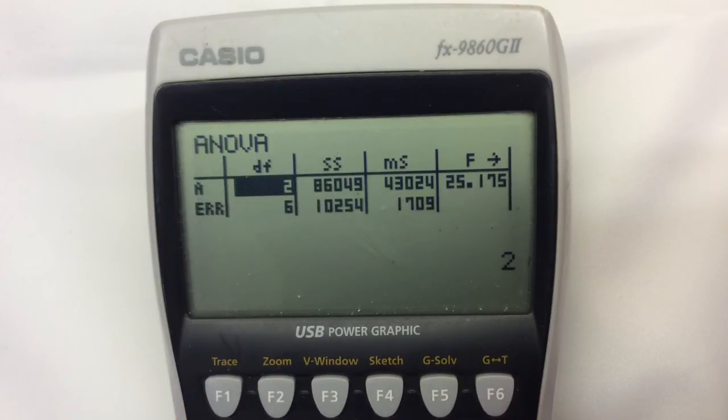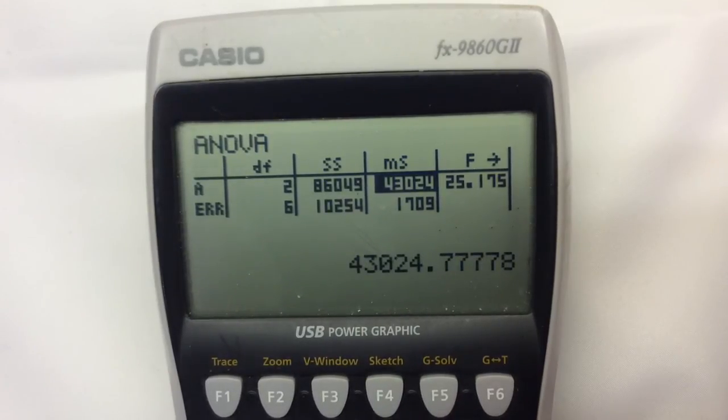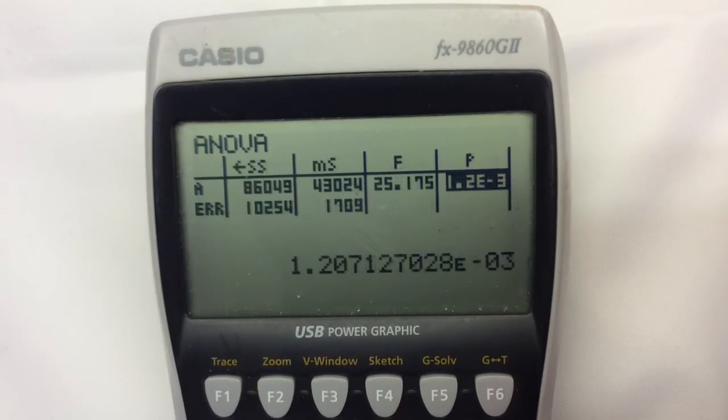And there it's got all of the information that we need. So we've got our degrees of freedom, our treatment sum of squares and the error sum of squares, the mean square treatment, mean square error, and so on. Our f test statistic is there, and the p-value is calculated for us too.